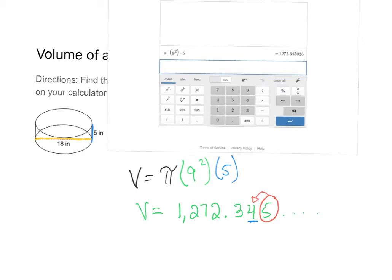So my rounded answer is going to be 1,272.35, and if I want to label my units depending on what the instructions say, because we're dealing with volume, I'm going to take the units and cube it.